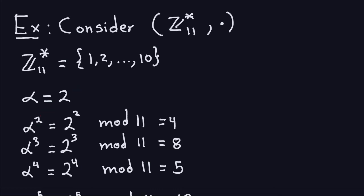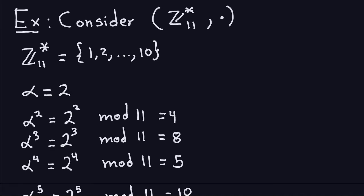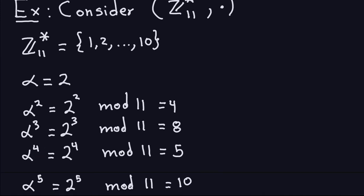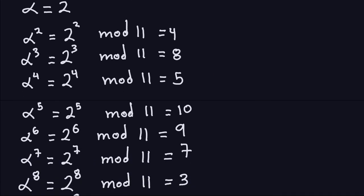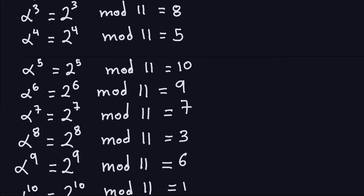So alpha squared is 2 squared modulo 11, which gives 4. Alpha cubed is 2 cubed modulo 11, which gives 8. Alpha to the 4th is 2 to the 4th, that's 16 modulo 11, which is 5. I have all the computations here so you can double-check with a calculator. Starting from alpha to the first power, I get: 2, 4, 8, 5, 10, 9, 7, 3, 6, and finally 1.